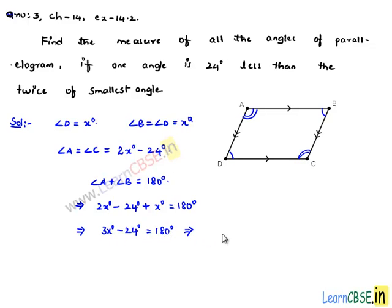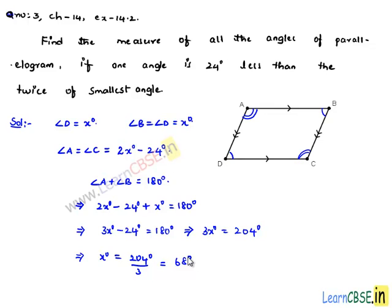This further implies that 3x equals 180 plus 24, which is 204 degrees. Therefore, x equals 204 divided by 3, and 3 goes into 204 sixty-eight times. So x equals 68 degrees, which is the measure of the smallest angle, angle B and angle D.